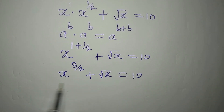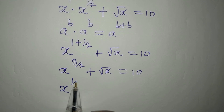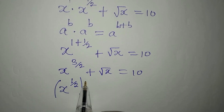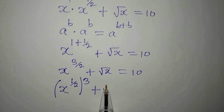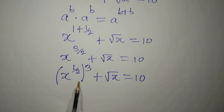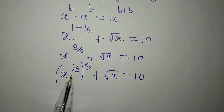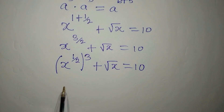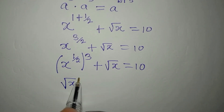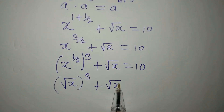We have square root of x here, so we can extract square root of x from x to the power of 3 over 2 to write it as x to the power of 1 over 2, all to the power of 3, plus square root of x equals 10. Opening that bracket gives us the power 3 over 2, and we can better write this as square root of x to the power of 3, plus square root of x equals 10.